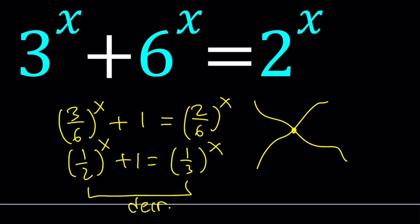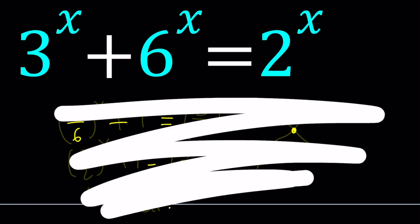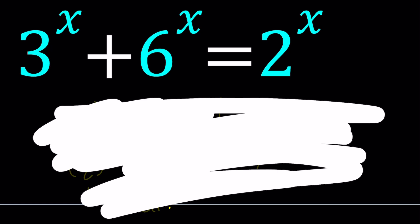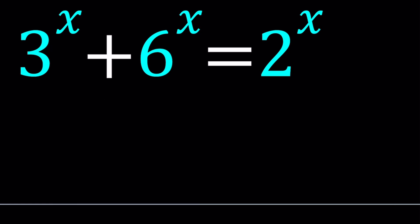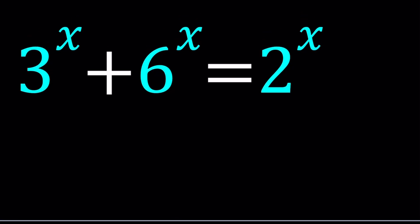So instead we're going to use something else. And that is dividing everything by 2^x to get a 1 on the right hand side instead of getting a 1 from the largest base.